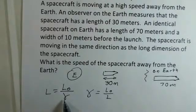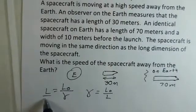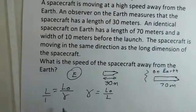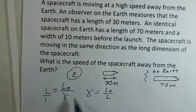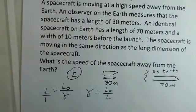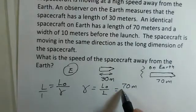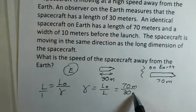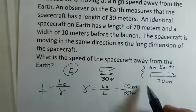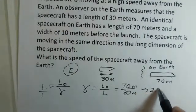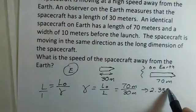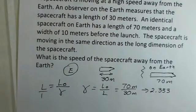I'm going to solve this for gamma. I just have to cross multiply: L equals L₀ over gamma. Cross multiply here: gamma equals L₀ over L. We have those values: 70 meters for L₀, 30 meters for L. So we know that gamma is 2.333.